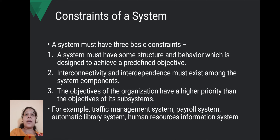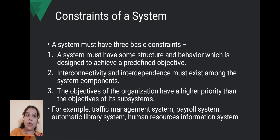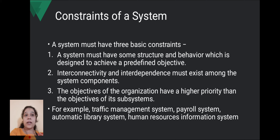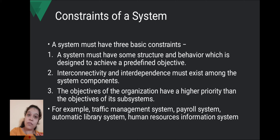Second, interconnectivity and interdependence must exist among the system components. All system components — the different groups — must work with each other. If one is not working with the others, then obviously the program or system will not work properly. Interconnectivity and interdependence means they are linked up and dependent on each other.